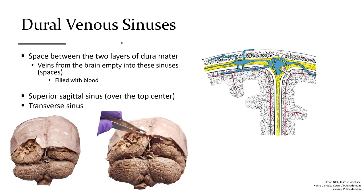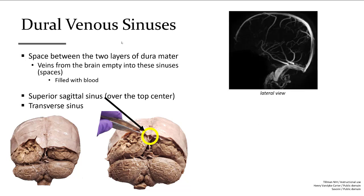Spaces created between the two dural layers are called sinuses. These sinuses are the venous drainage points from the brain, as well as where cerebrospinal fluid returns to the circulatory system. This is a venogram showing the drainage with blood highlighted coming from the brain and traveling through these dural venous sinuses.